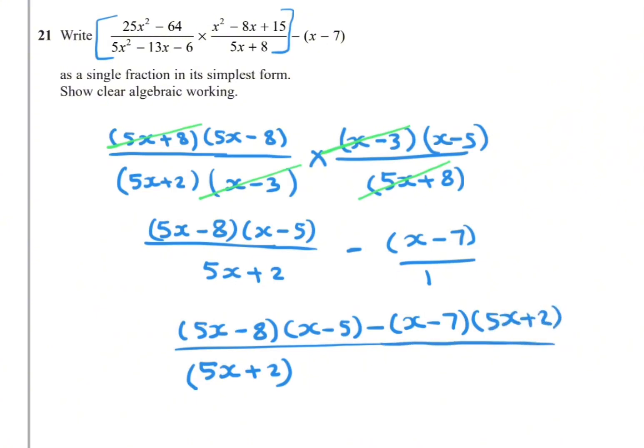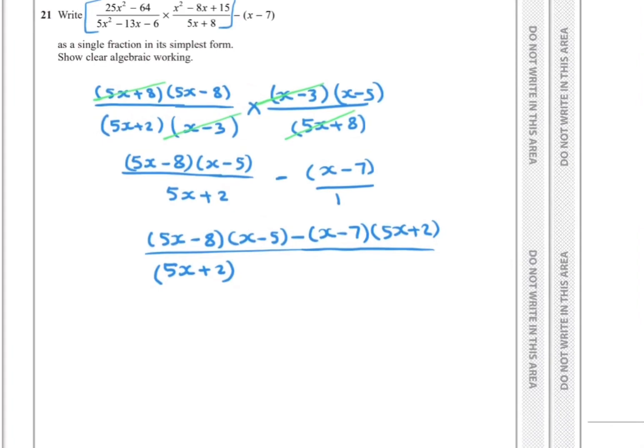We need to simplify the numerator. Multiply 5x times x: 5x². 5x times -5: -25x. -8 times x: -8x. -8 times -5: +40. This is the result from the first bracket. Minus—it's better to write a bracket.